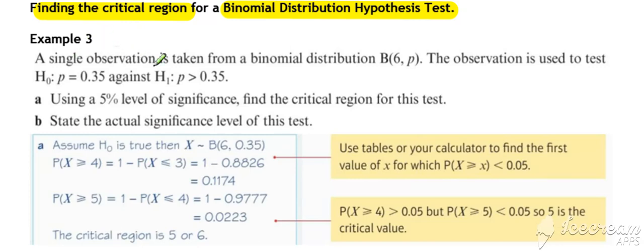So first of all, for a one-tailed test at a 5% significance level, find the critical region. Assuming our binomial with null and alternative hypotheses set up, we want to find the probability of X being greater than or equal to some particular value where it falls below the 5% significance level.